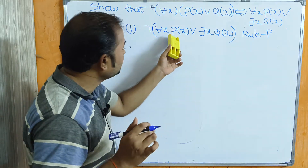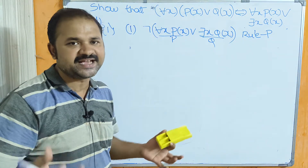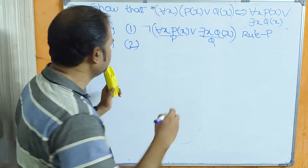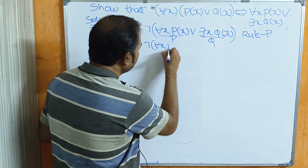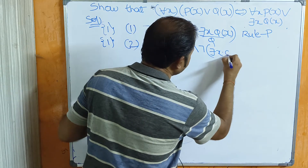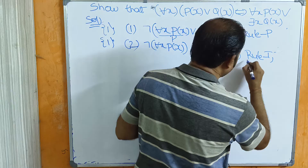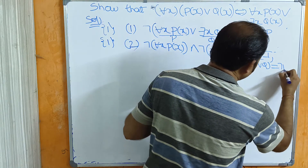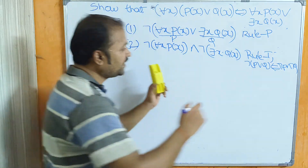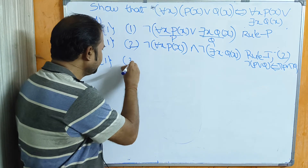We introduce the negation of the conclusion as a new premise — rule P. The negation of [for all x P(x) or there exists x Q(x)] is our first step. We also use all propositional logic rules: rule P, rule T, equivalence laws, implication laws, plus specialization and generalization laws. Applying De Morgan's law — negation of (P or Q) equals negation P and negation Q — this gives us negation[for all x P(x)] and negation[∃x Q(x)].